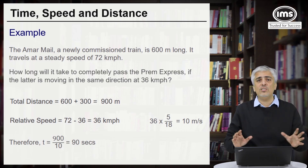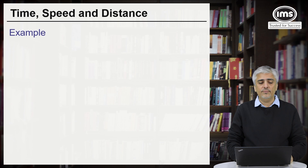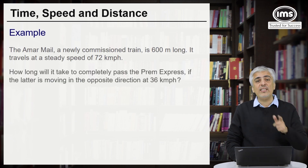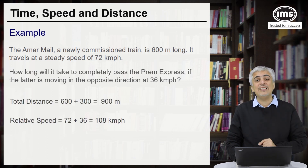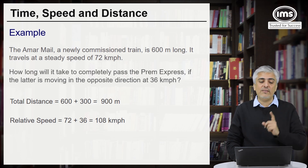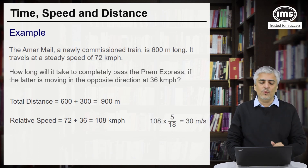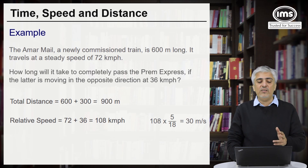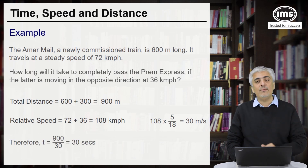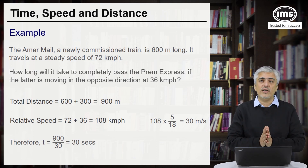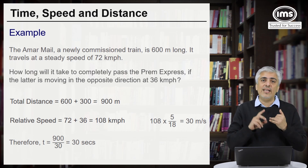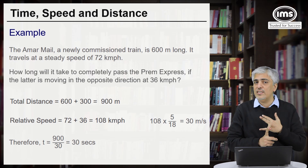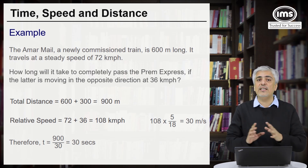Last example: this time the Prem Express is moving in the opposite direction — that is the only change. The relative speed will now be 72 plus 36 instead of minus, giving 108 km per hour. Converting: 108 × 5/18 = 30 meters per second. Total distance is again 900 meters. Time taken = 900 divided by 30 = 30 seconds. The key rule: distance = length of first train plus length of second body; speed = always relative speed.